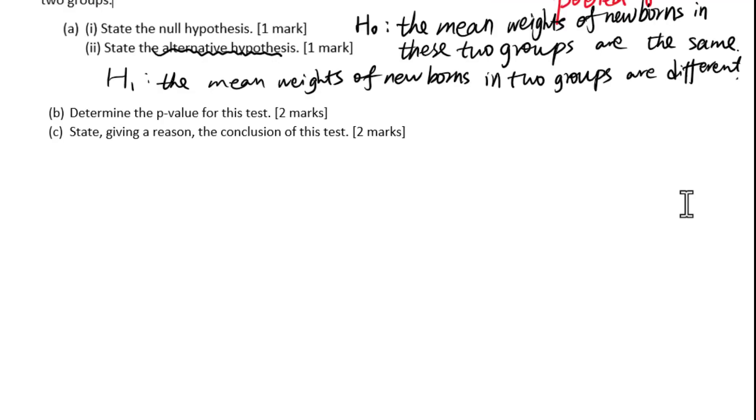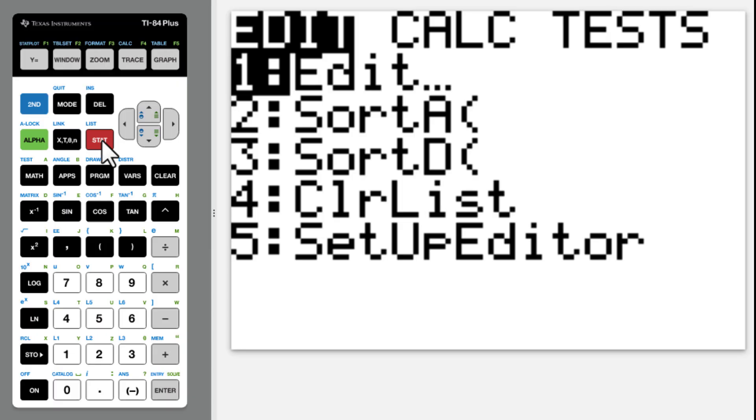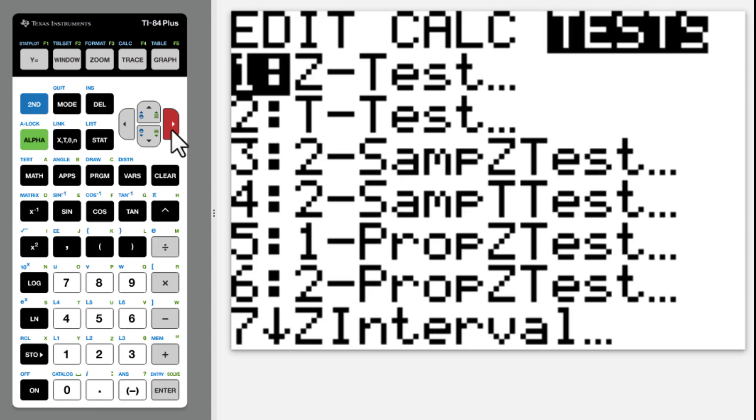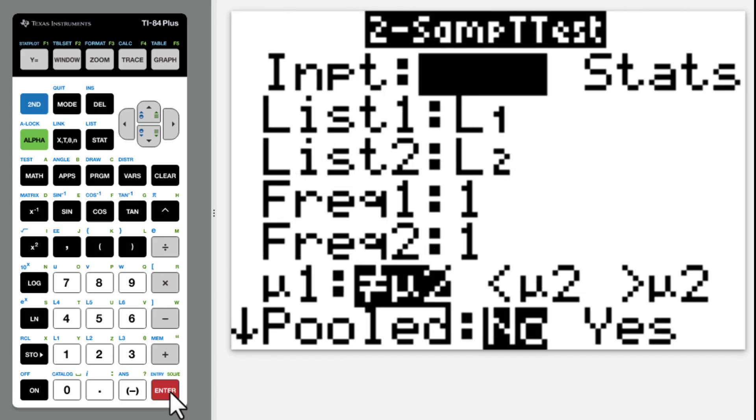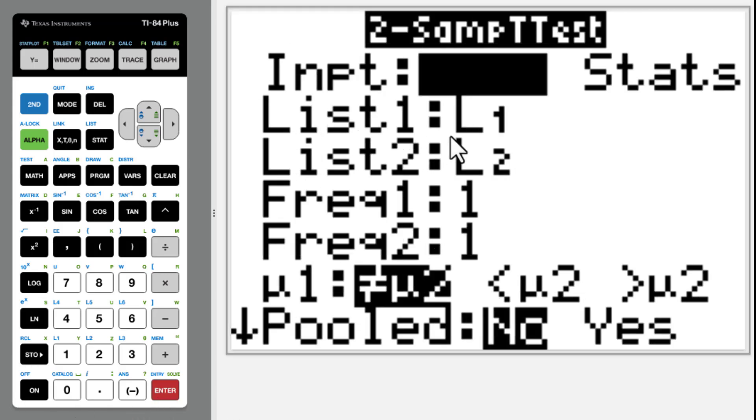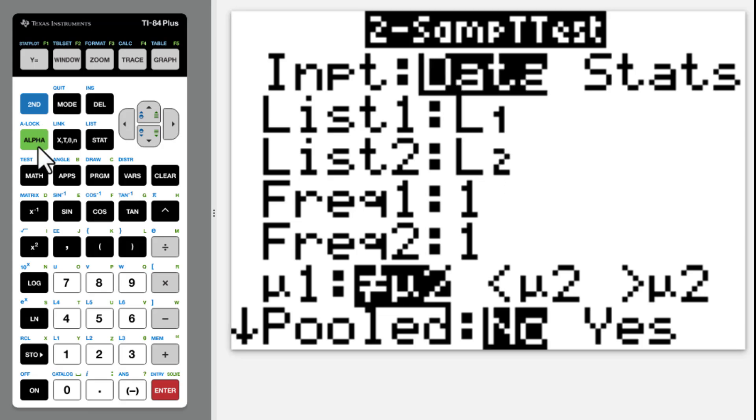For B, determine the p-value for this test. Go to Stat, Test, look for two sample t-tests. Next. You could say List 1, L1, L2, which means we need to put data in L1, L2. Then for pooled, we will highlight Yes.